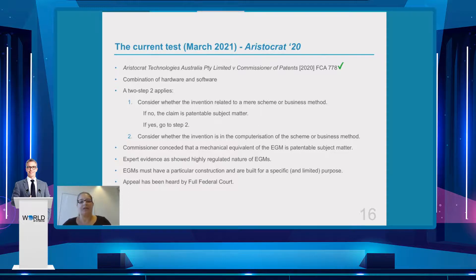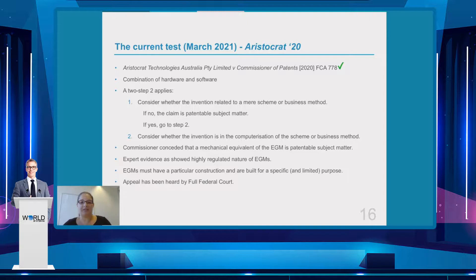Step two involves considering whether the invention is in the computerization of the scheme or business method. In this instance, the federal court found that the invention was actually for patentable subject matter. A number of considerations were made along the way. Firstly, the commissioner for patents had conceded that a mechanical equivalent of the gaming machine was patentable subject matter. The court had also heard a large amount of expert evidence that showed the highly regulated nature of gaming machines. Finally, the court noted that gaming machines must have a particular construction and are built for a specific and limited purpose.